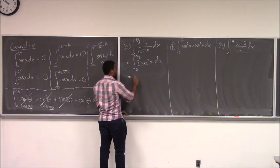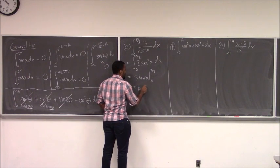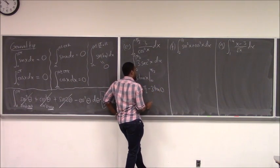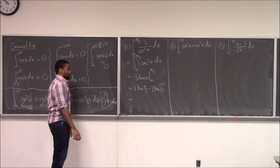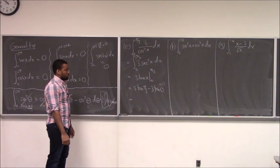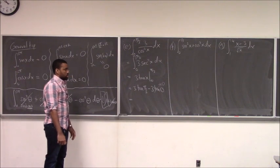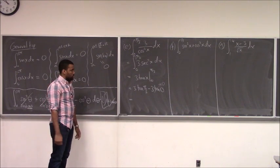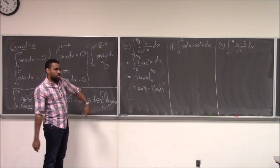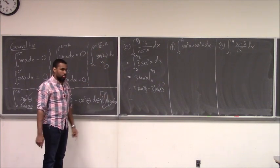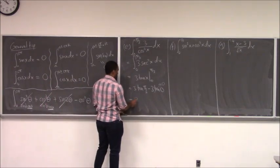The anti-derivative of secant squared is tangent. So this becomes three times tangent of x, evaluated from zero to pi over three. That gives three times tangent of pi over three minus three times tangent of zero. Tangent of zero is zero. For tangent of pi over three, recall it's sine over cosine: sine of pi over three is radical three over two, cosine is one-half, so tangent of pi over three is radical three.